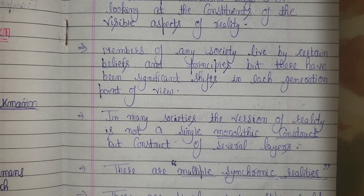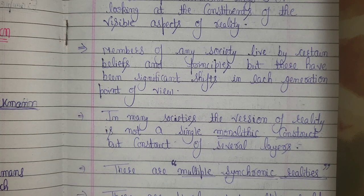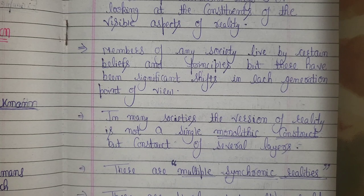There have been significant shifts in each generation's point of view. When our parents were following certain norms, we are not following them today. For example, in particular days we would not eat outside. Inter-caste marriage was not allowed; love marriage was a taboo. Arranged marriage was the pattern set. Today things have changed. These beliefs and patterns shift from generation to generation.